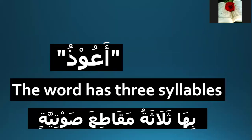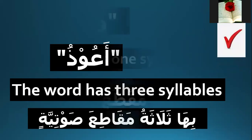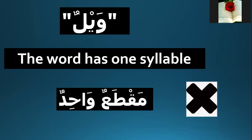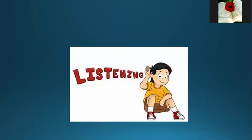A-u-dhu — this word has three syllables? Maqatir salatiyah. Three or no? The word actually has one syllable — not two, not three. That's wrong.